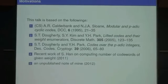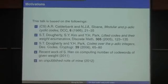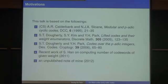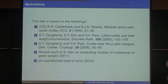This talk about the p-adic code and the lift of the code is based on the following papers. The first one is Calderbank and Sloane's modular and p-adic cyclic codes. They showed a way of constructing p-adic codes in 1995. And then after ten years, Dori and Kim — she was a student of mine — and we published a paper about the lifted code and their weight enumerators. And next year, Dori and I published also a paper about the code of p-adic integers.